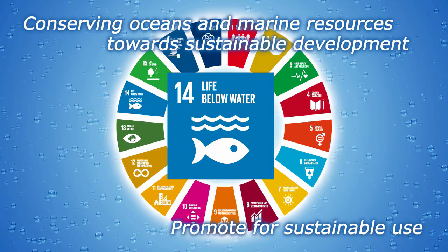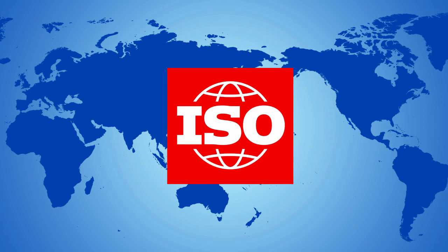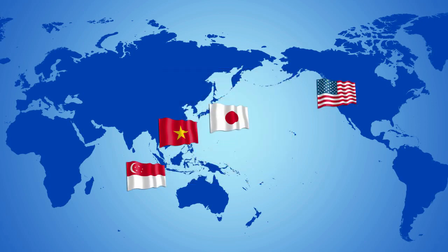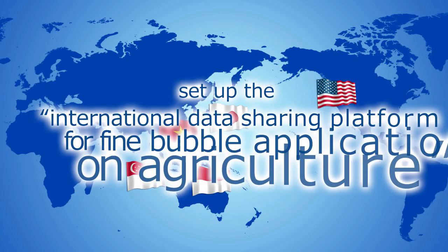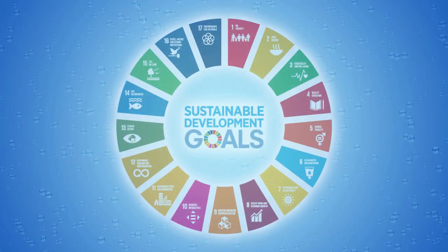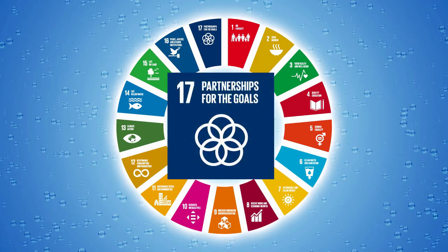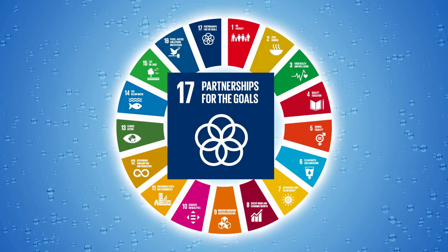Agriculture is one of the most important industries for Asia-Pacific countries and regions, including the mainland US and Hawaii. FBIA, leading the ISO standardization for application of fine bubbles together with member countries, has also set up an international data sharing platform for fine bubble applications on agriculture with Asia-Pacific countries. This is intended to disseminate new sustainable agricultural technology to various corners of the world. This activity goes along with Goal 17: strengthen the means of implementation and revitalize the global partnership for sustainable development.